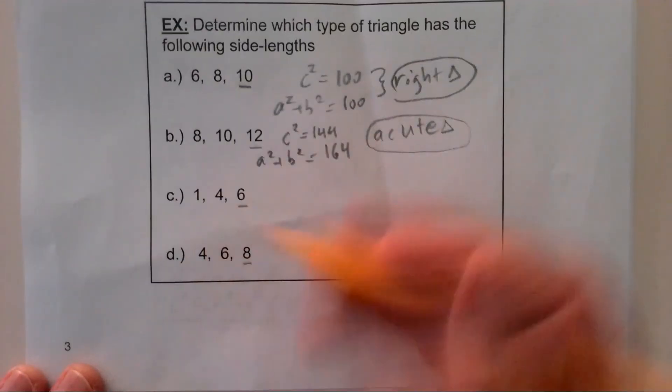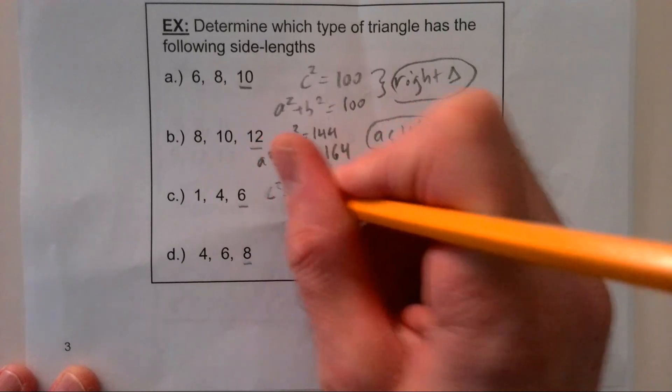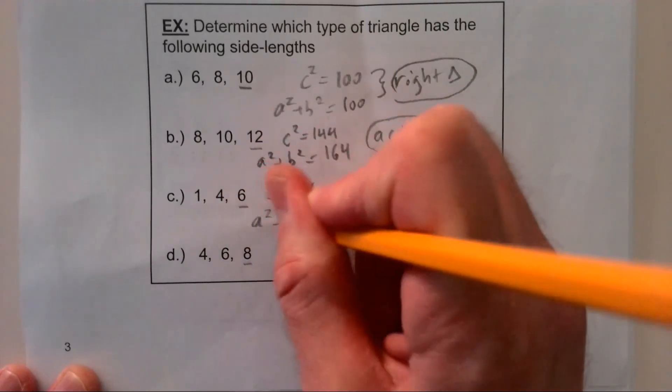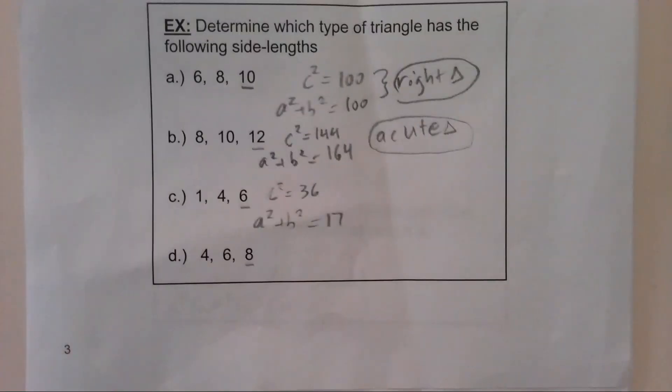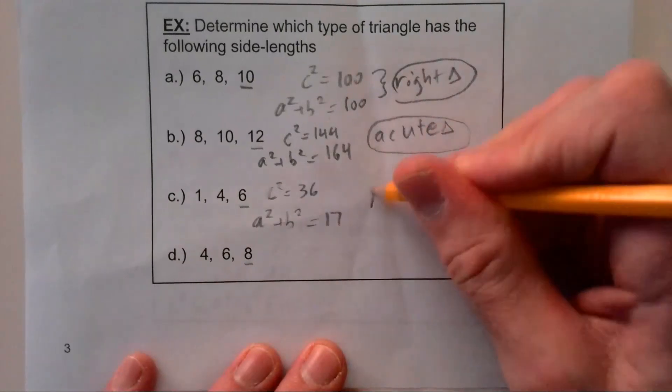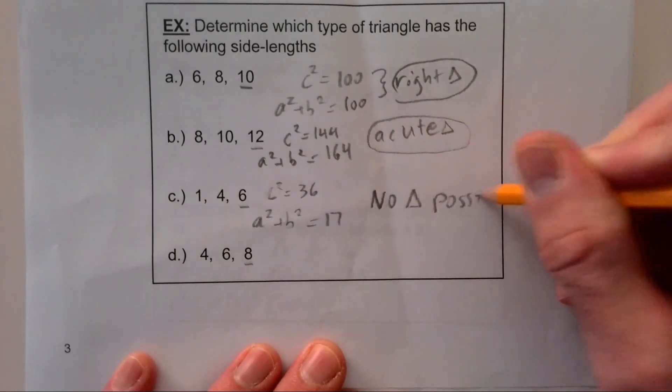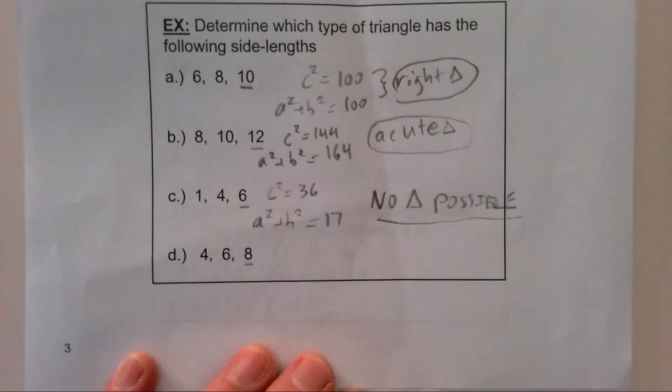Okay, let's see. 6 squared, let's see, that's 36. A squared plus b squared is 17. Okay, so this is actually a trick question. You'll be very tempted to write obtuse. However, this is a no triangle possible.